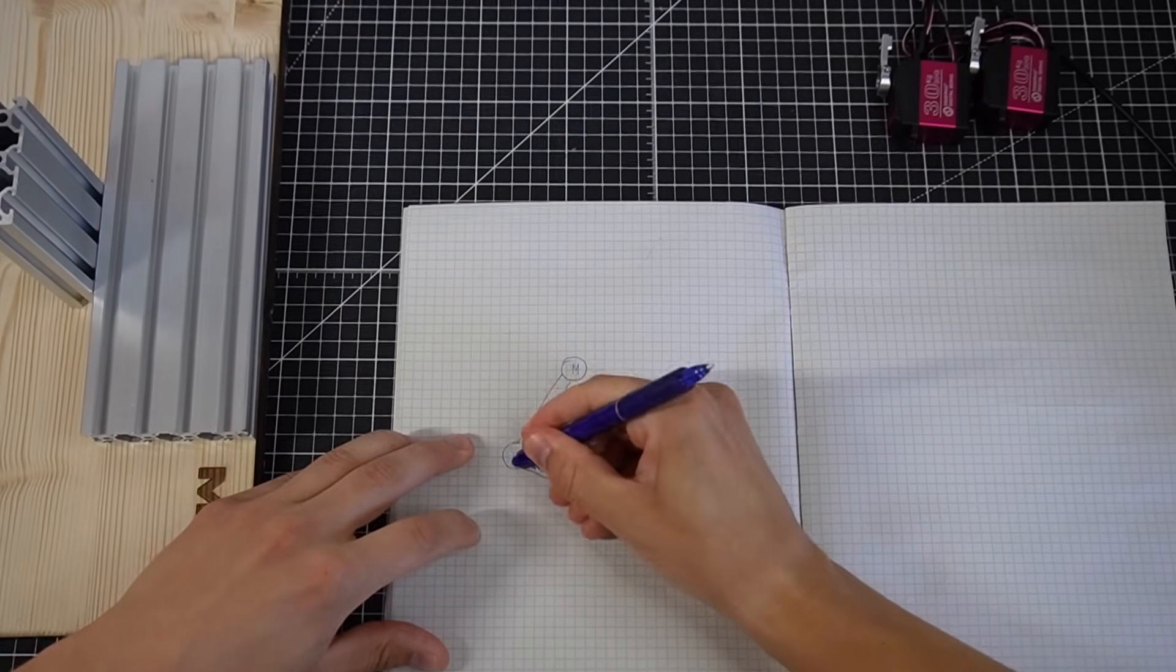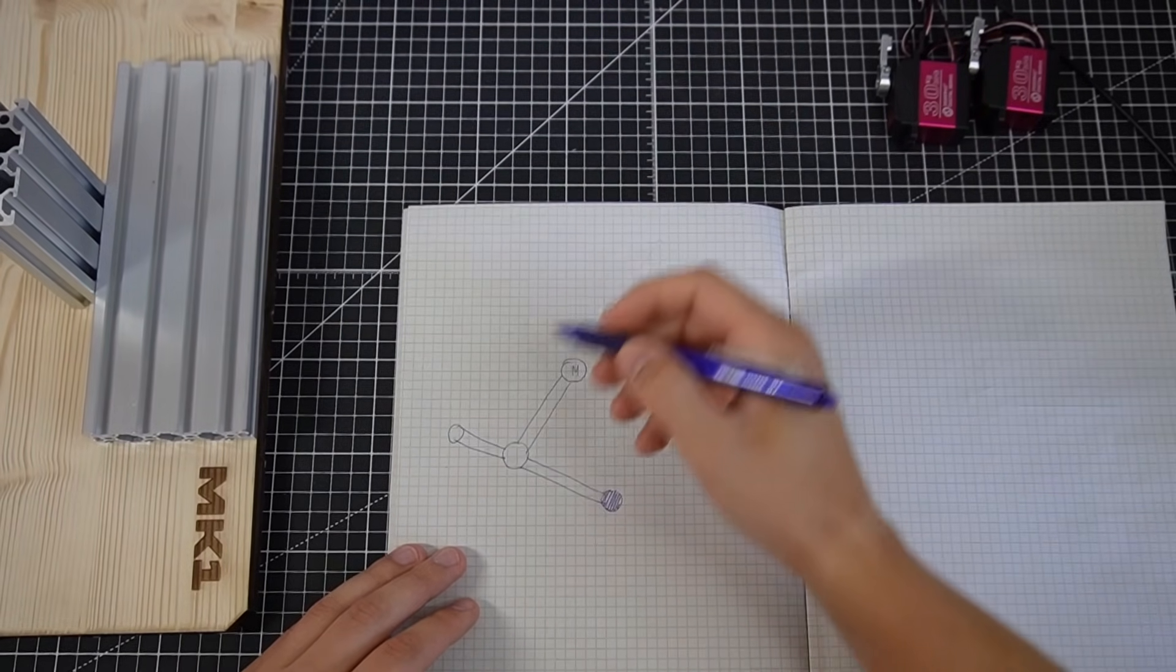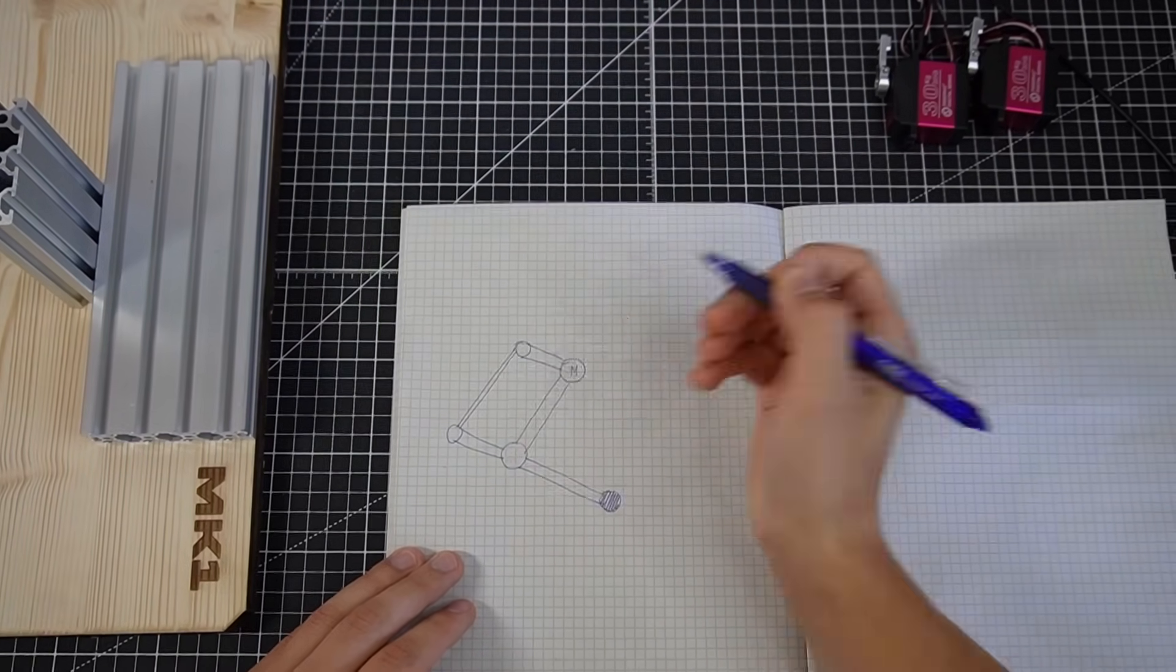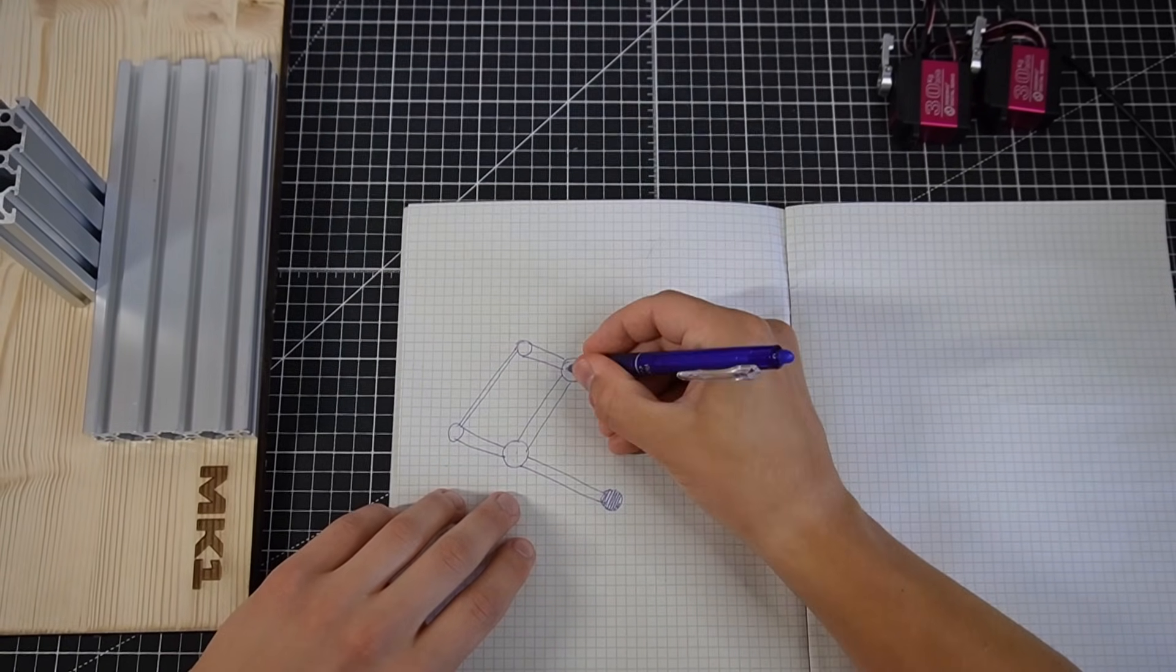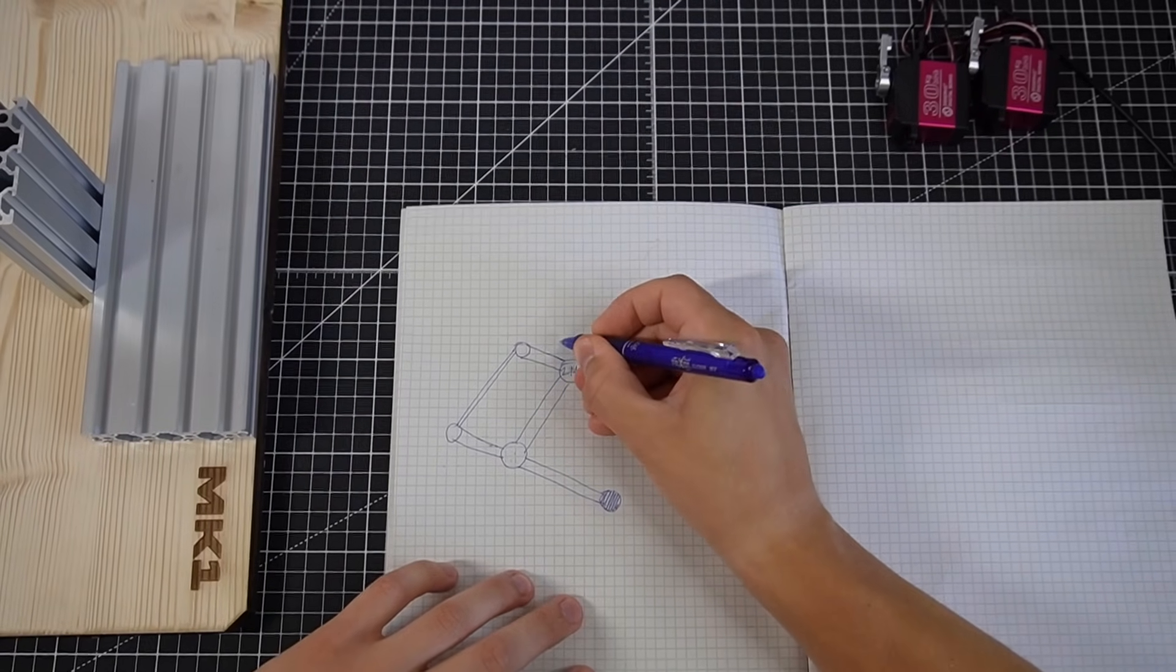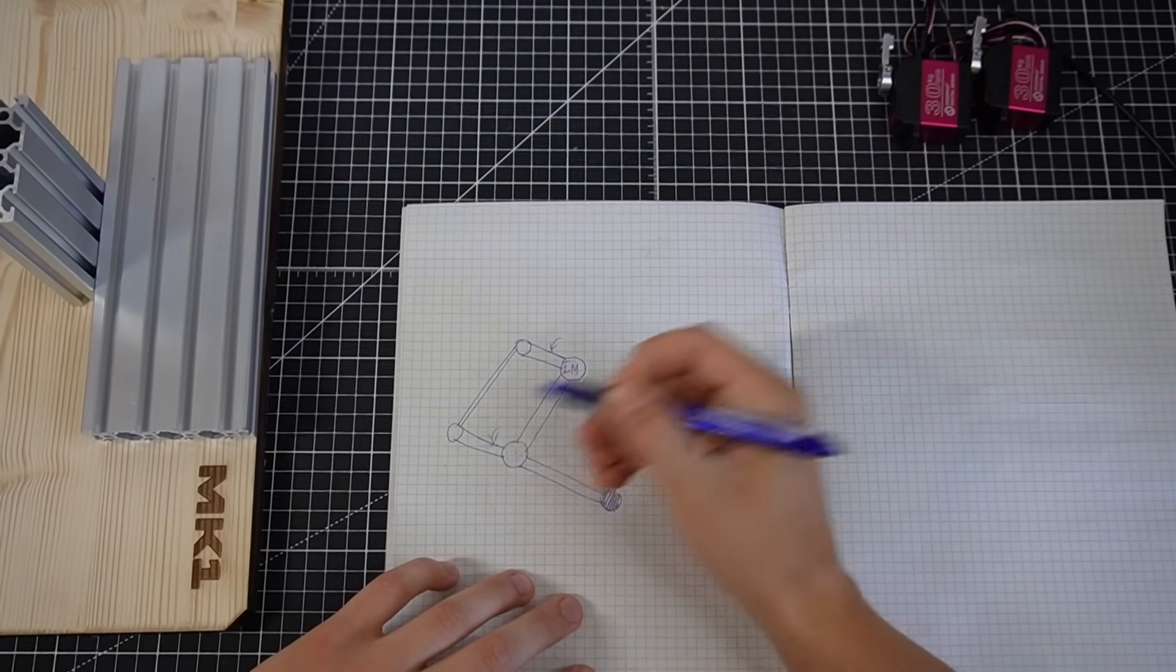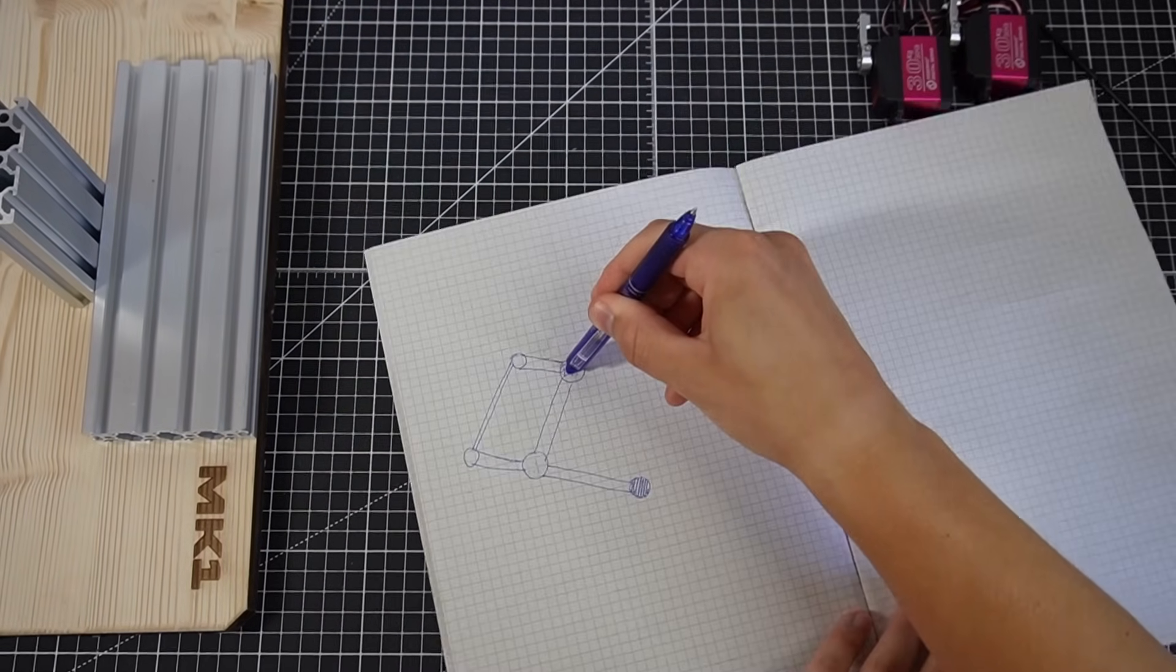So instead of this motor we can extend this link at the joint and make a parallelogram. Now we can move the motor from here to here. This way we have two motors here. One controls this angle which gets copied to here and moves the foot. We also have the original motor which rotates the whole linkage.